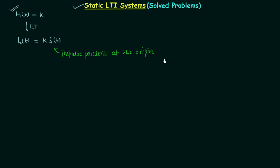We are not worried about checking if the system is LTI or not, because the transfer function or impulse response will be given to you, and they are only defined for LTI systems. So basically, we are talking about a system having the properties of three types: static, linear, and time-invariant. Since the impulse response or transfer function is given, we already know it is a linear time-invariant system. The only thing we need to check is whether it is static or dynamic, following this condition.